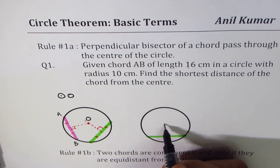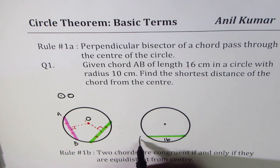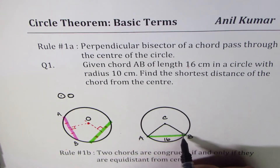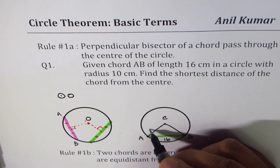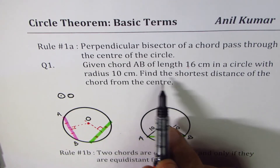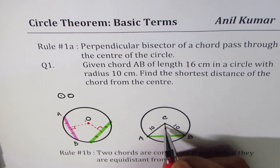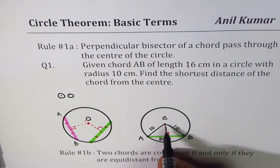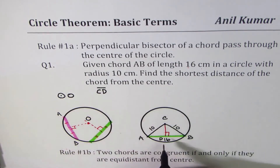The radius is 10, so let's say that's the center C. If I connect the center with the two endpoints of chord AB, I get a triangle. We are given a chord of length 16 cm in a circle with radius 10, so AC equals 10. Now, the shortest distance from C to the chord is found by dropping a perpendicular from C to the chord — let me call this point D. Then CD is the shortest distance we need to find.